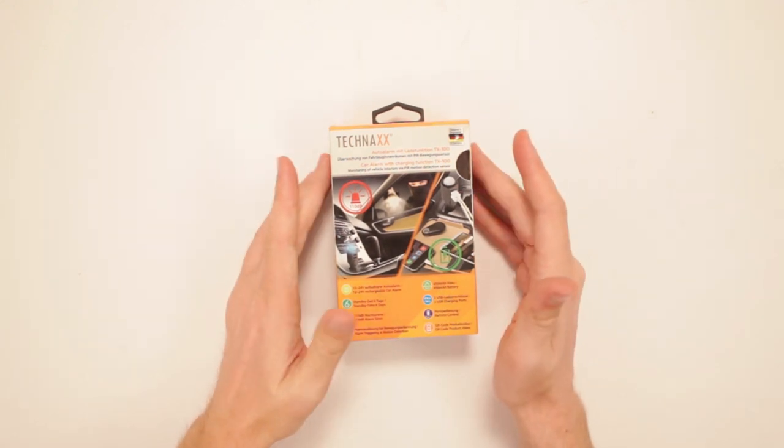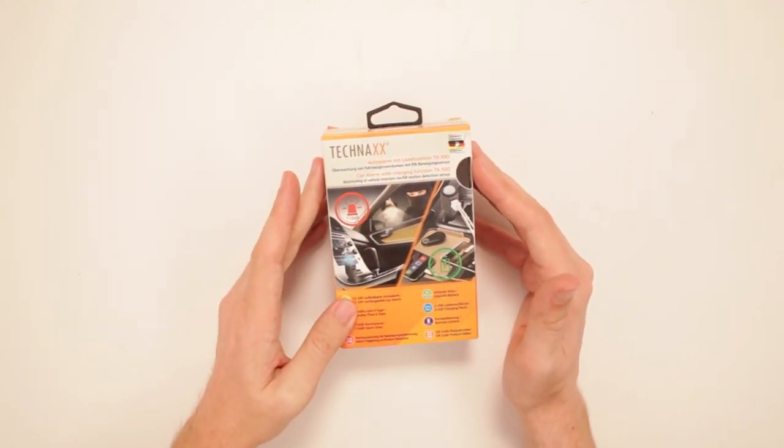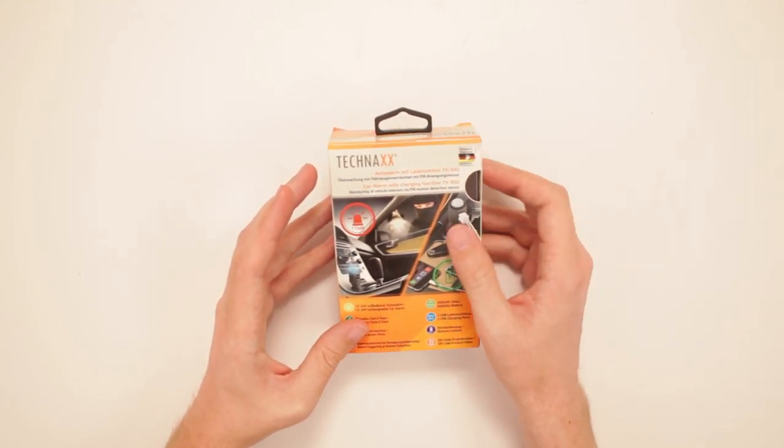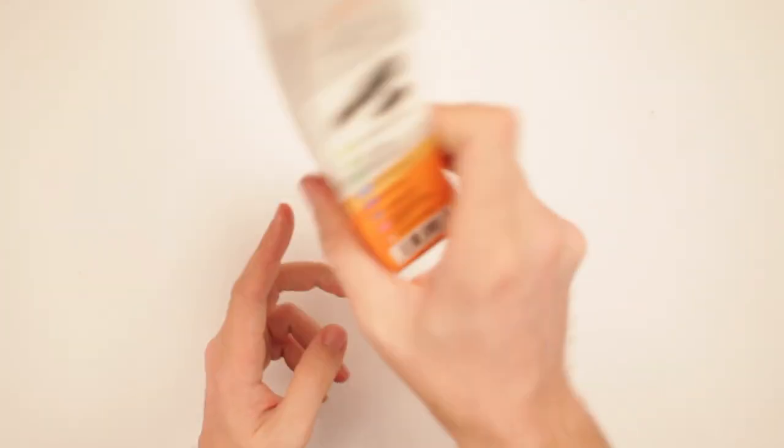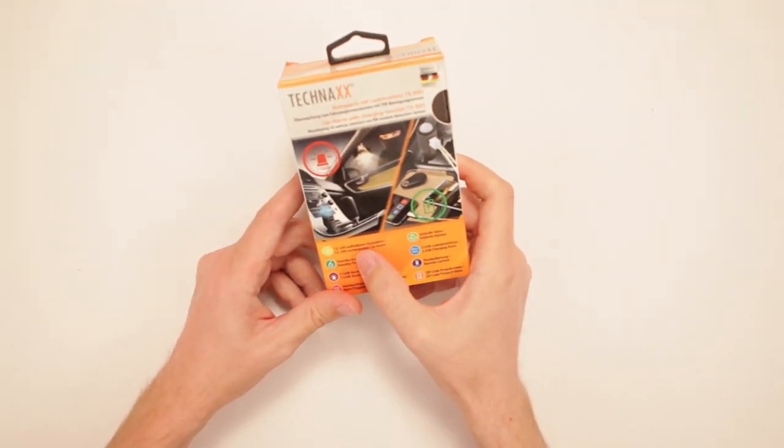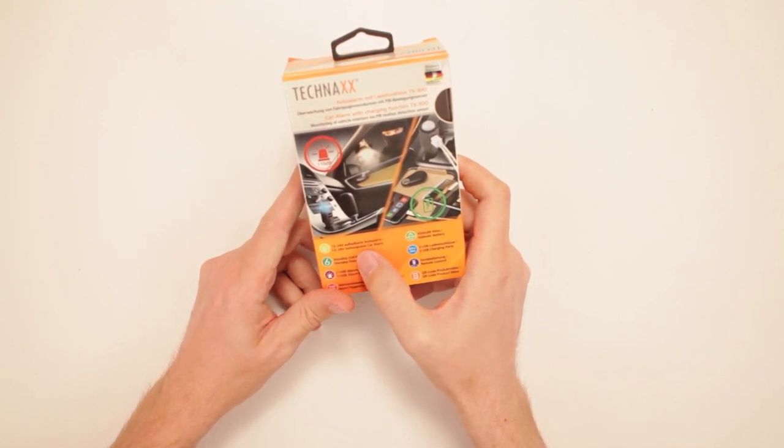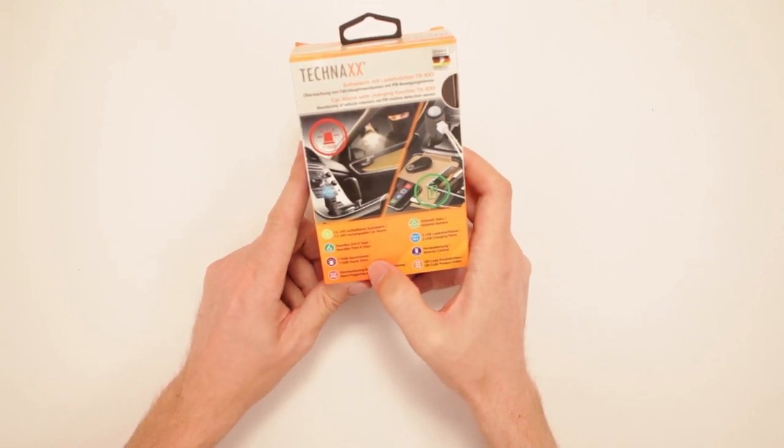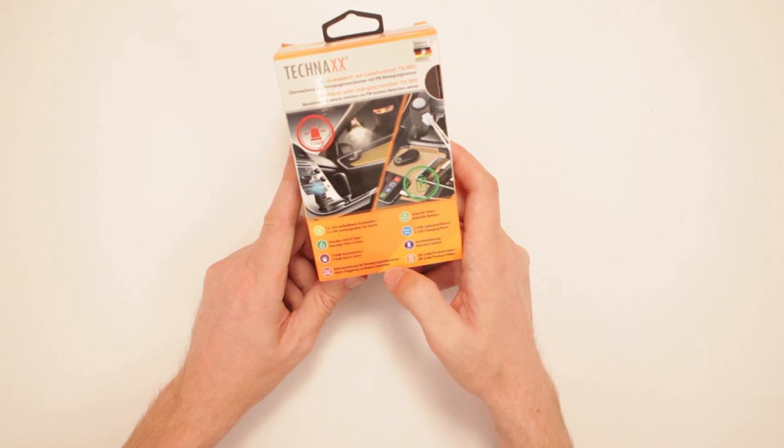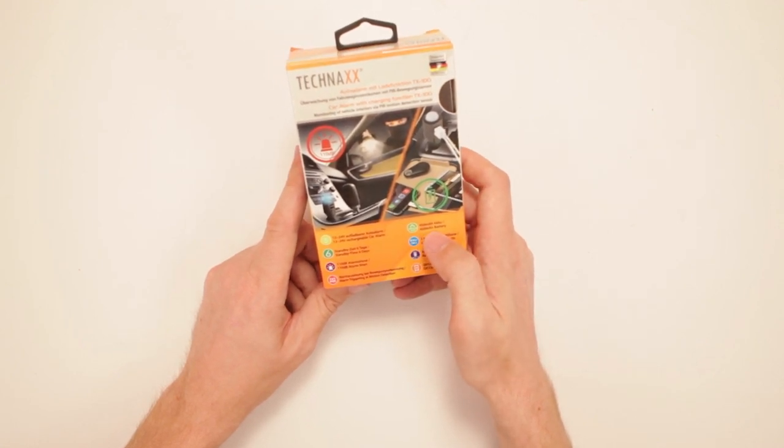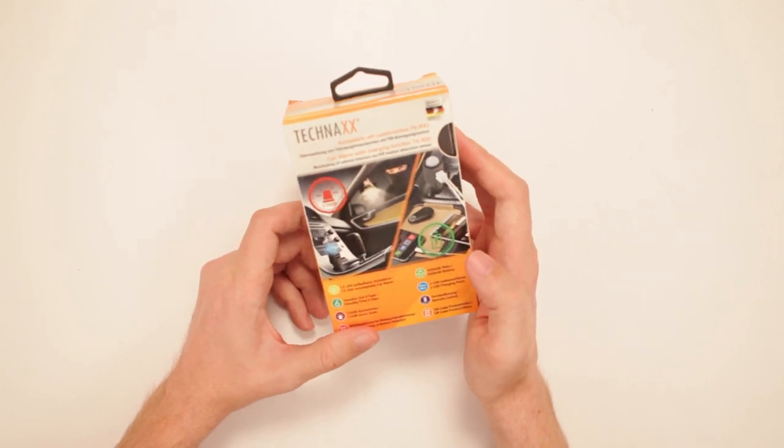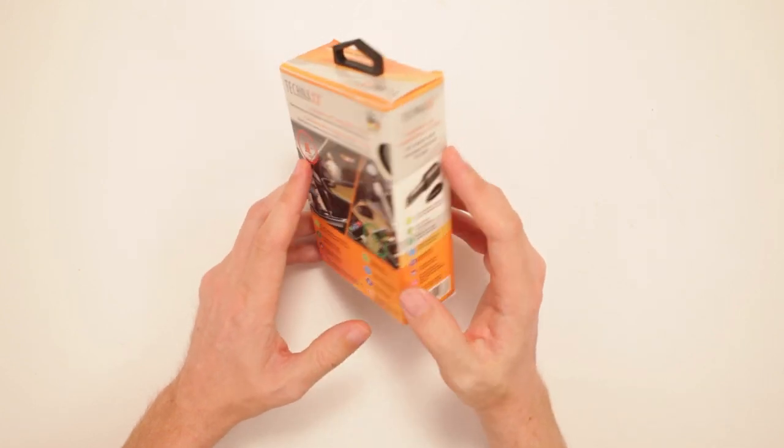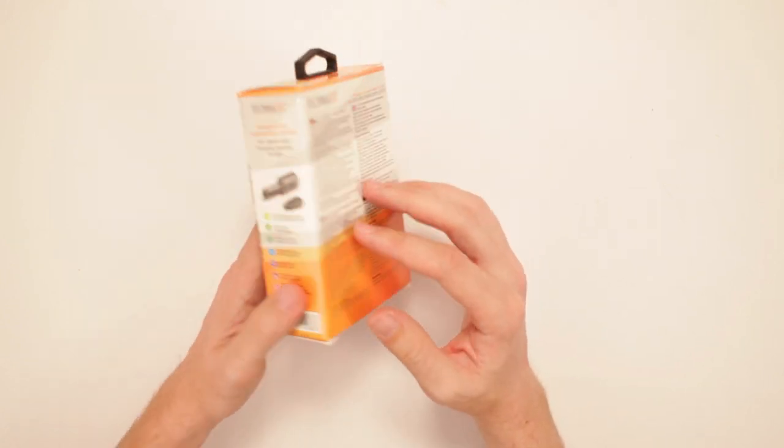This is TechNex Car Alarm with Charging Function TX-100, monitoring of vehicle's interiors via PIR motion detector sensor. Yeah it knows where my car is right now, don't you try and do nothing, it knows. It's got 12-24 volt rechargeable car alarm, standby time 6 days, 110dB alarm siren, alarm triggering at motion detection, 450mAh battery, 2 USB charging ports, remote control, and QR code product video. So it's got a lot of stuff.